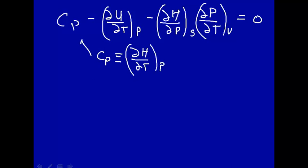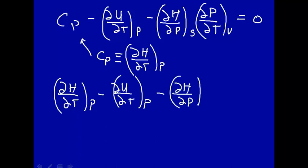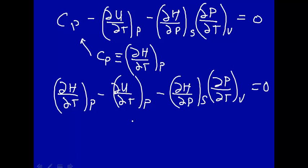Let's put that in. So now our equation is how H changes with temperature at constant pressure, minus how U changes with temperature at constant pressure, minus how H changes with pressure at constant entropy times how pressure changes with temperature at constant volume — that's equal to zero. Here we have an H and here we have a U, and we know a relationship between H and U.